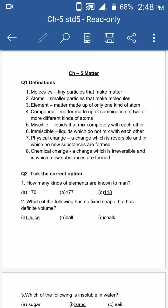Question number two is tick the correct option. First is how many kinds of elements are known to man? Matlab human ko kitne elements known hain? Kitne elements pata hain? Kitne elements hain total? One hundred and eighteen elements are there. They are known to man.